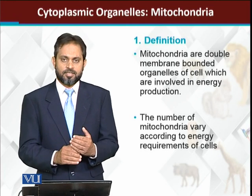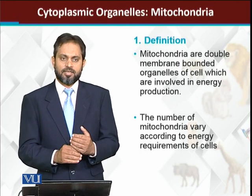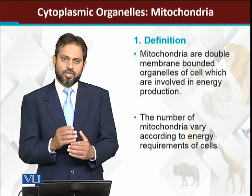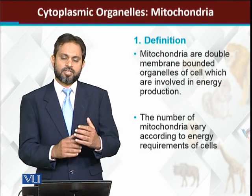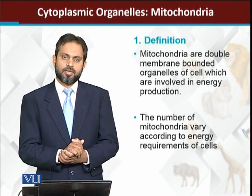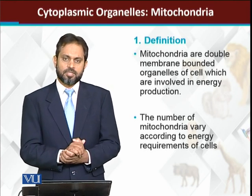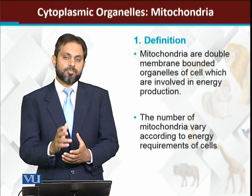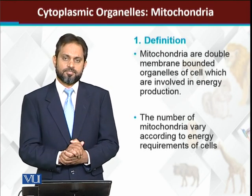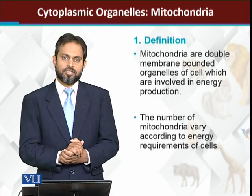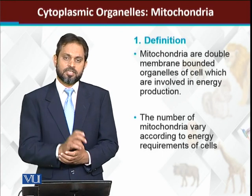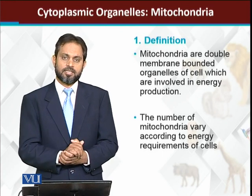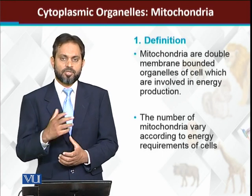The cells that work extensively — such as liver cells — have high energy requirements, and therefore they have a higher number of mitochondria. The number of mitochondria in a single liver cell can be up to one thousand.